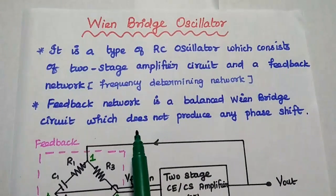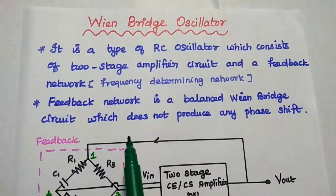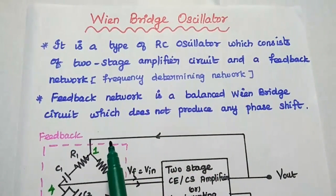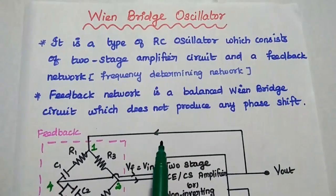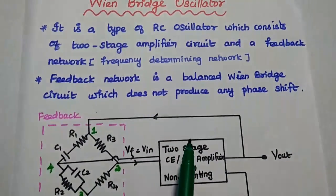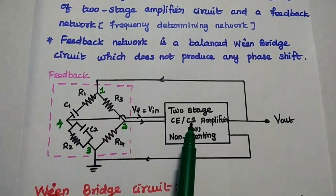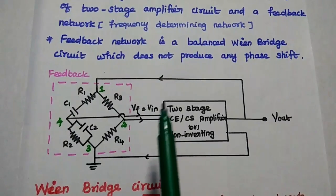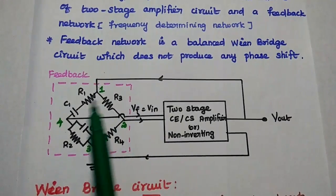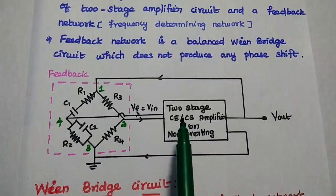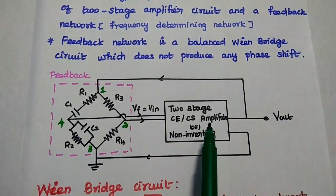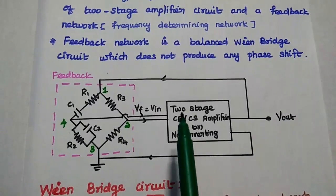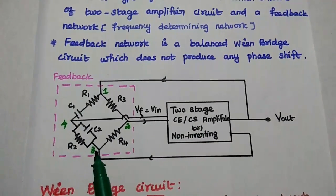The Wainbridge oscillator has very good frequency stability. A balanced Wainbridge circuit can be used as a feedback network, which does not produce any phase shift. As we know, in any oscillator the circuit should produce 360 degrees of phase shift. But in this oscillator, the feedback does not produce any phase shift, so a two-stage CE amplifier or CS amplifier is used to produce 360 degrees of phase shift. This is the amplifier stage, and here is the feedback stage.